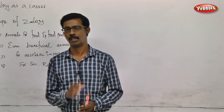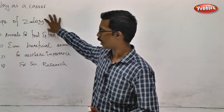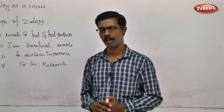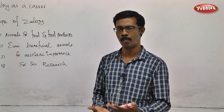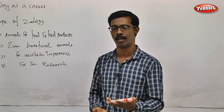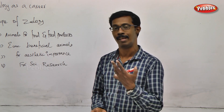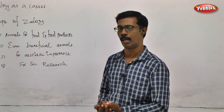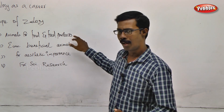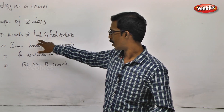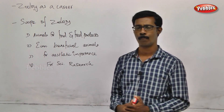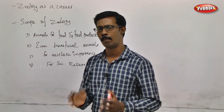The third thing is we can see a heading: the scope of zoology. What is the scope of zoology? We know economic importance. Why do we know the scope of zoology? We can see animals. What are the animals used for? Food and food products — we can see many of the animals.